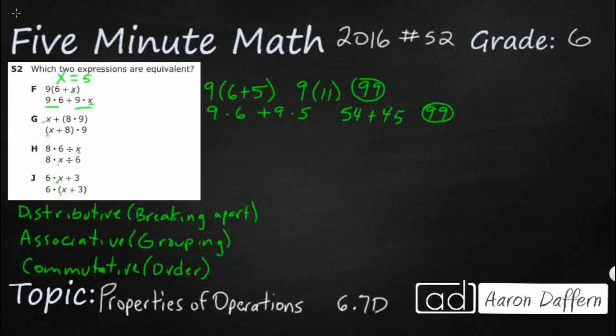So this is definitely the distributive property. And the reason we know it's the distributive property is you have this 9 multiplied by the 6 plus x. And the 6 plus x is within the parentheses. So you can distribute it or you can break it apart. So you multiply the 9 times the x, and then 9 times the 6 separately, and then still add them together. So that looks like it works.